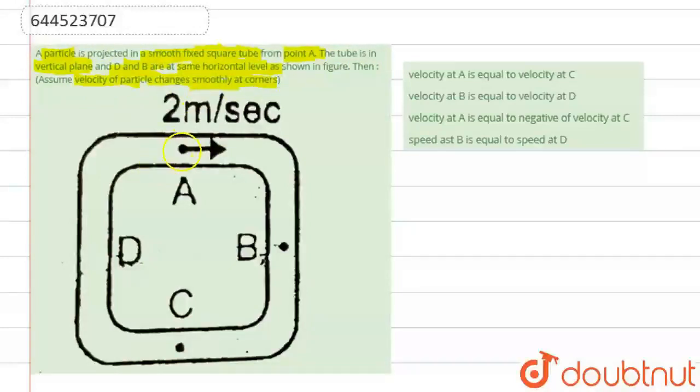Assume the velocity of the particle changes smoothly in the corners. That means over here, the speed remains constant throughout the motion because there are smooth corners. It will smoothly change the direction of its motion, but the speed will remain constant.